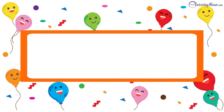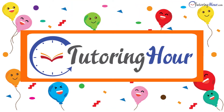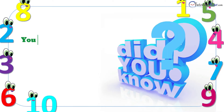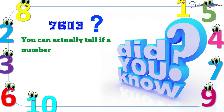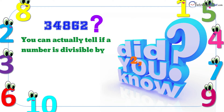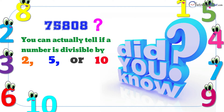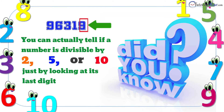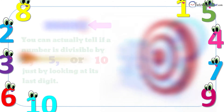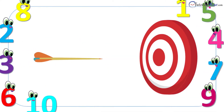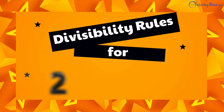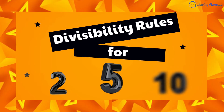Hello, and welcome to Tutoring Hour. Did you know that you can actually tell if a number is divisible by 2, 5, or 10 just by looking at its last digit? In this video, we'll do exactly that as we walk through the divisibility rules for 2, 5, and 10.